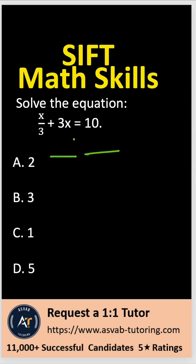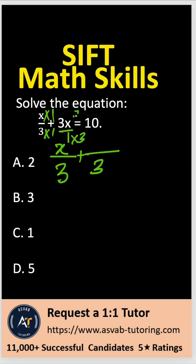In that case, the denominator will be 3. So multiply 3x by 3 over 3 — the top also multiplied by 3 — so that gives you 9x over 3. Combined with x over 3, that gives you x plus 9x equal to 10.